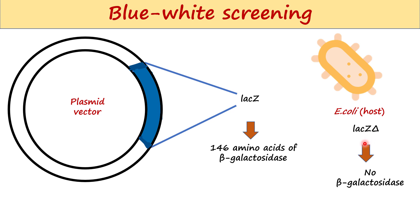The E. coli bacteria used as host for transformation contain a mutant lac gene — a deletion of a particular part of the lac gene, written as lac Z del — and hence they cannot produce beta-galactosidase.